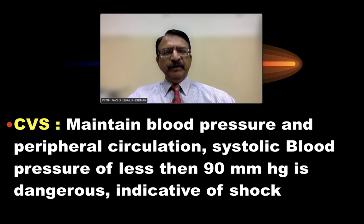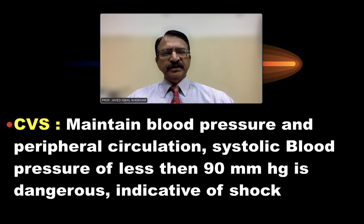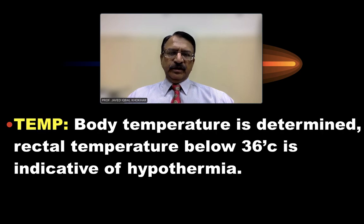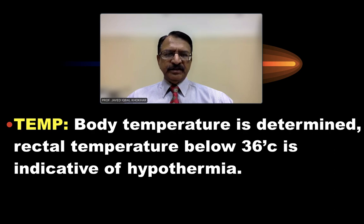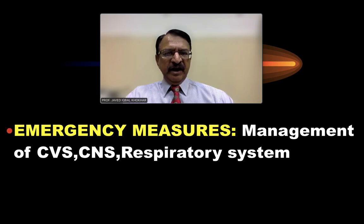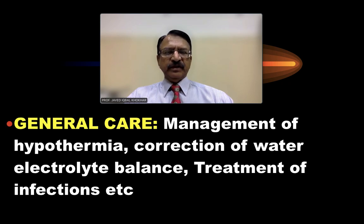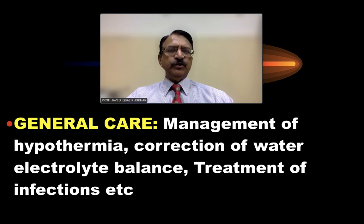In the cardiovascular system, blood pressure and peripheral circulation should be maintained. Systolic blood pressure less than 90 mmHg is dangerous and indicates the patient is going into shock. Body temperature is assessed rectally; a rectal temperature less than 36 degrees Celsius is indicative of hypothermia. In emergency management we manage cardiovascular, respiratory and CNS systems. In general care we manage hypothermia, correct water and electrolyte balance, and treat infections.